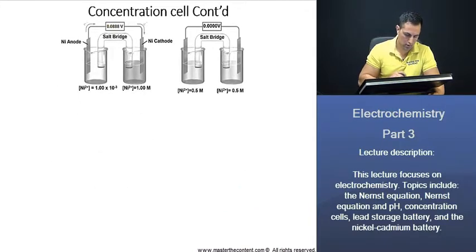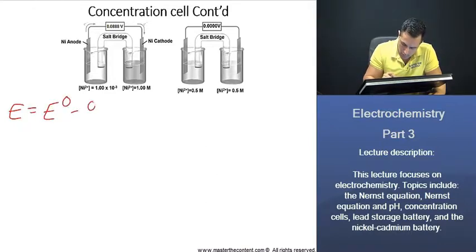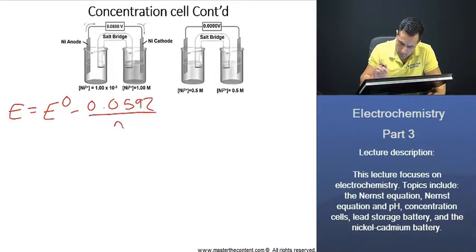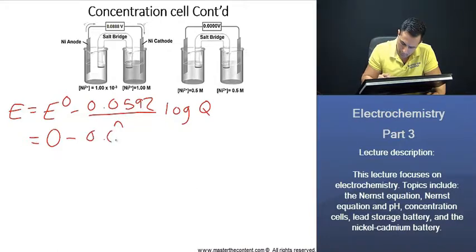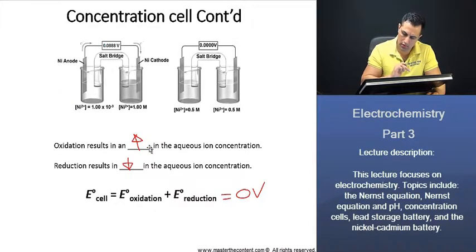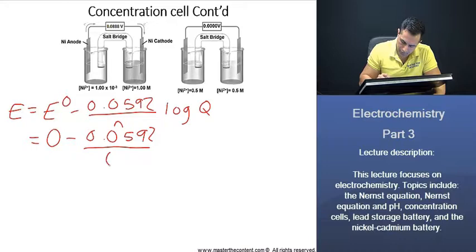We'll begin here again, with our Nernst equation. And if you recall, that was just negative 0.0592 over n, and that's going to be log. This is going to give us our standard cell potential. What was it? Well, we just said that it was zero. And how many moles of electrons do we see being transferred? There's going to be two moles. We can go ahead and write that in as well.